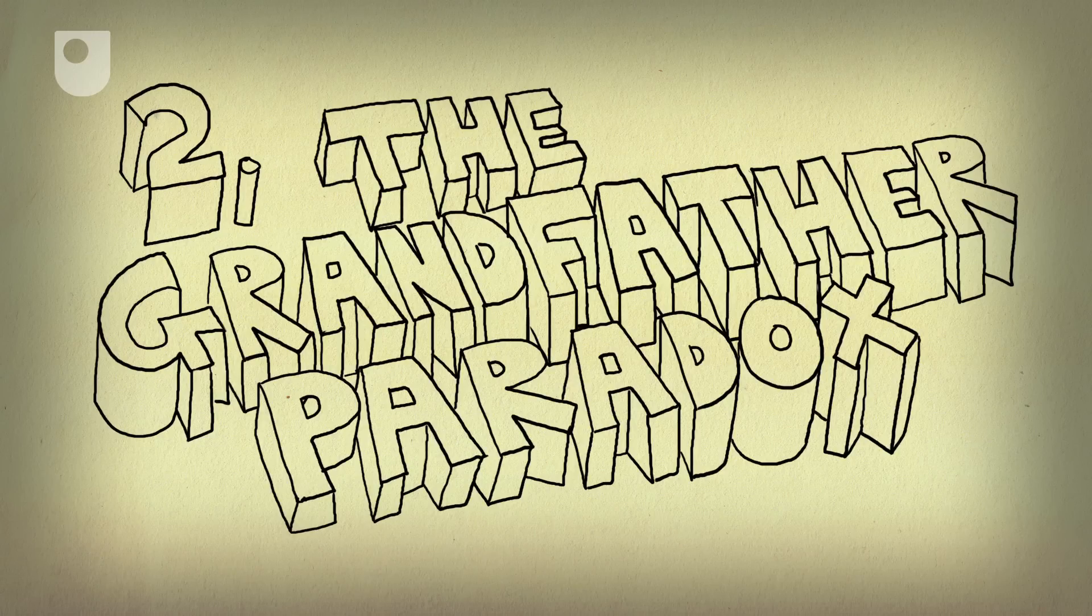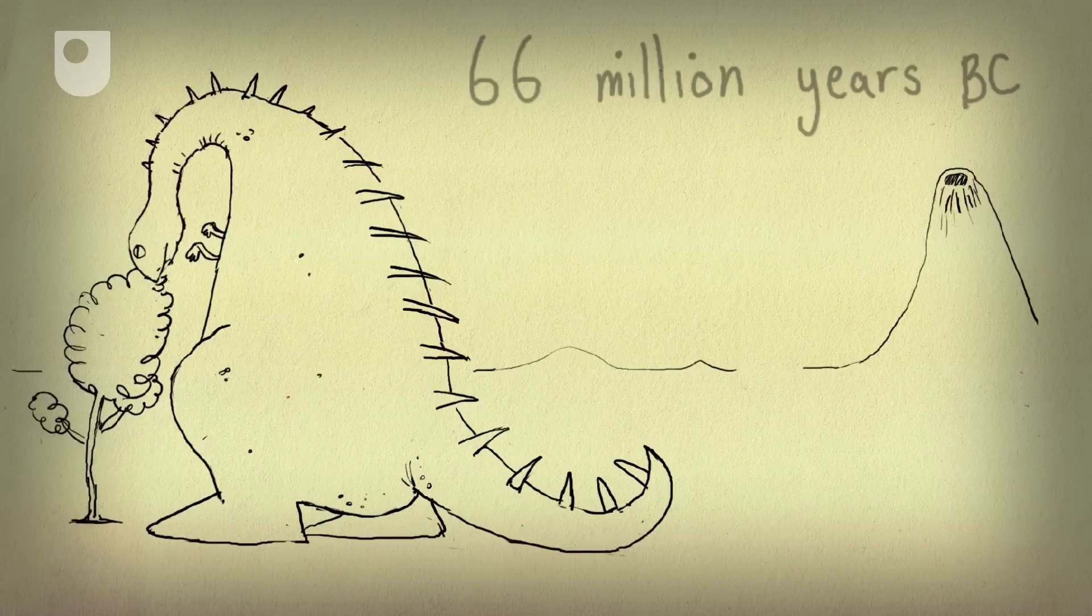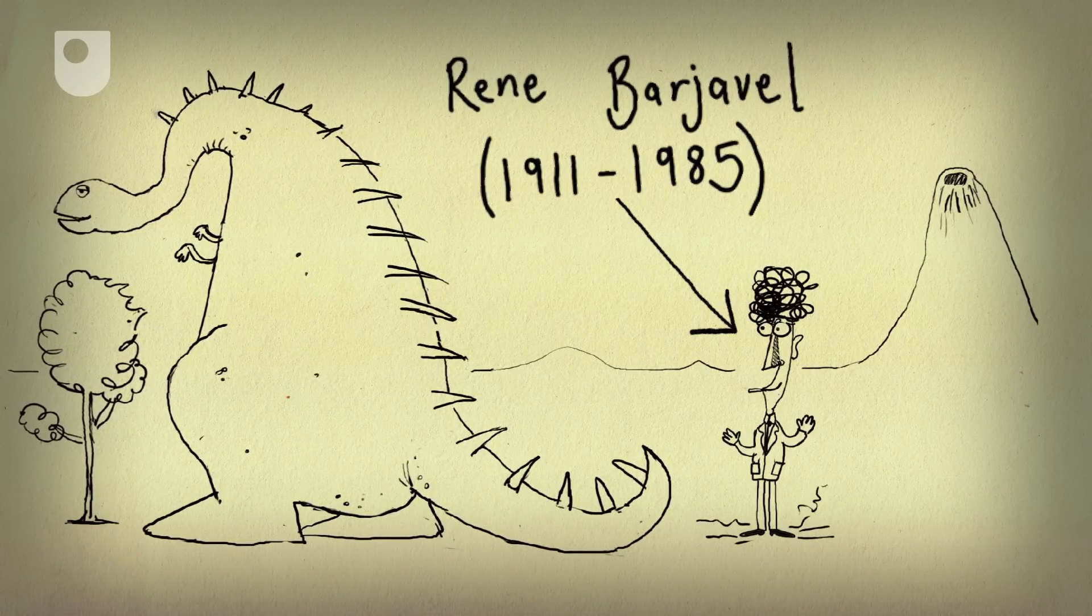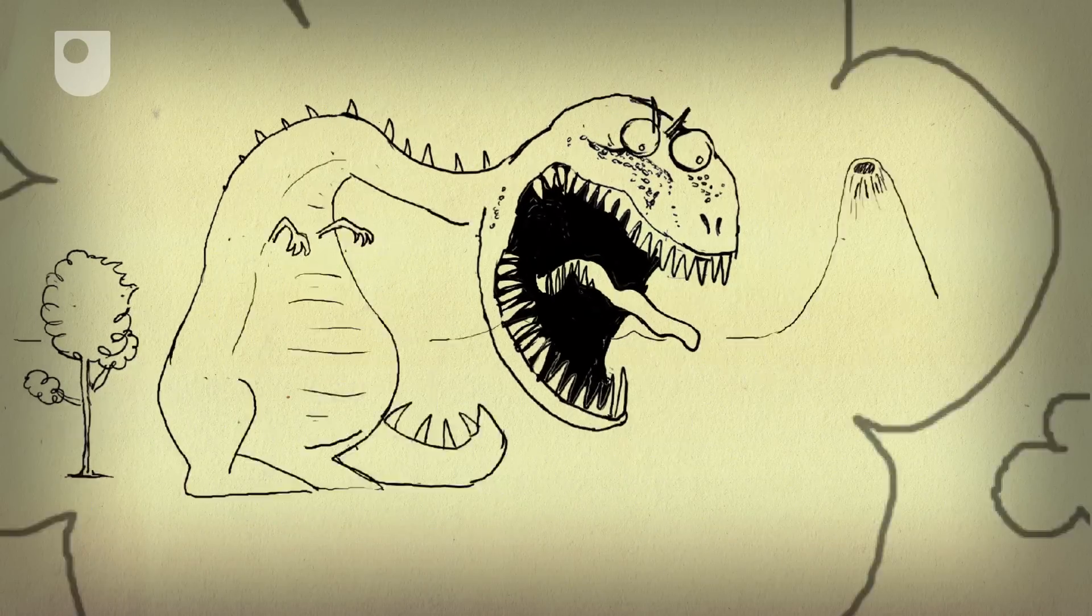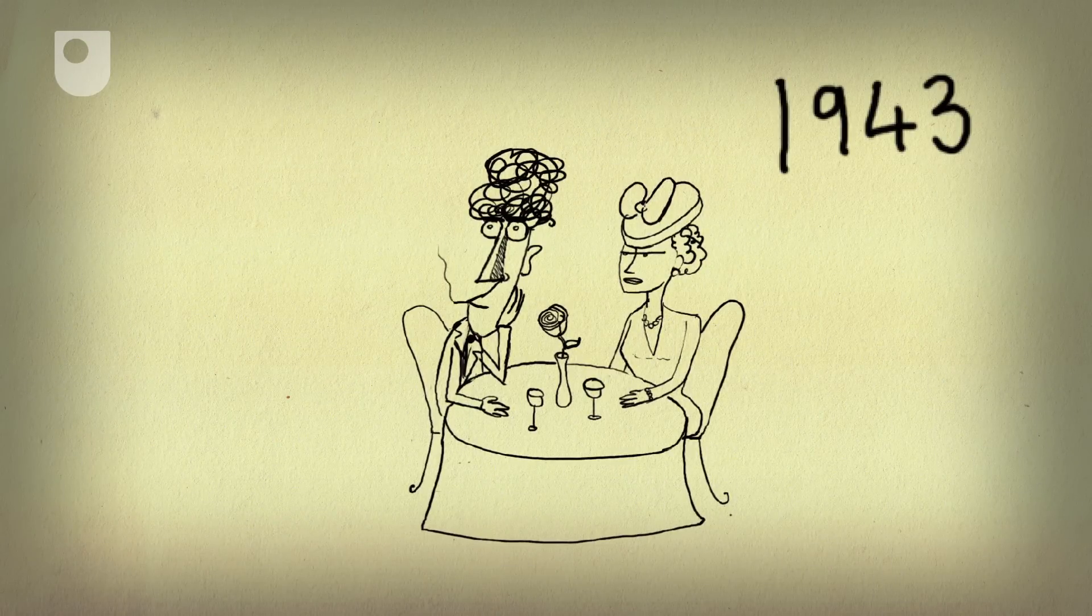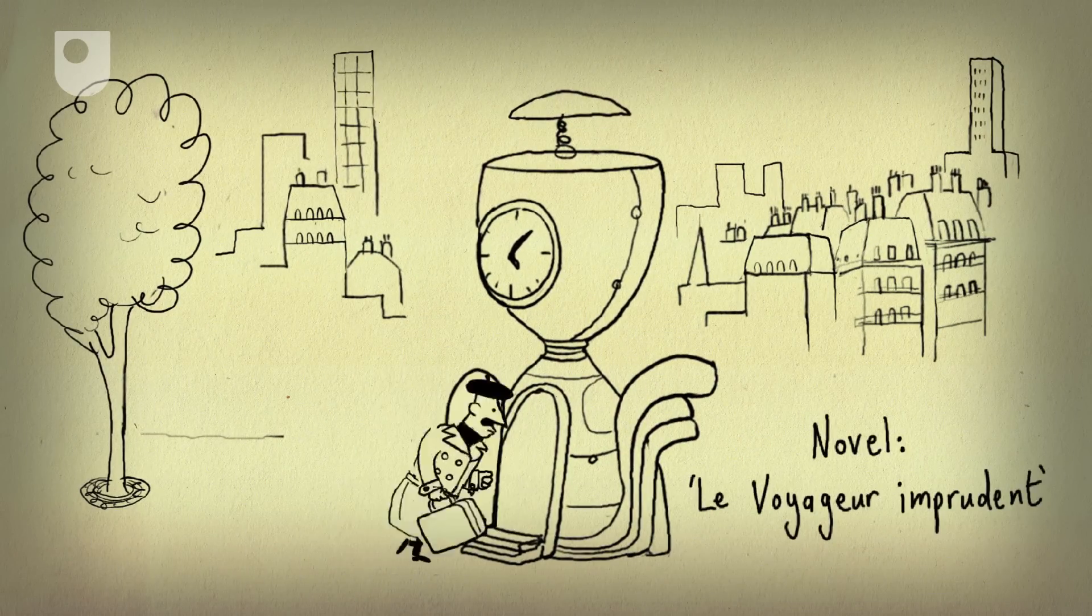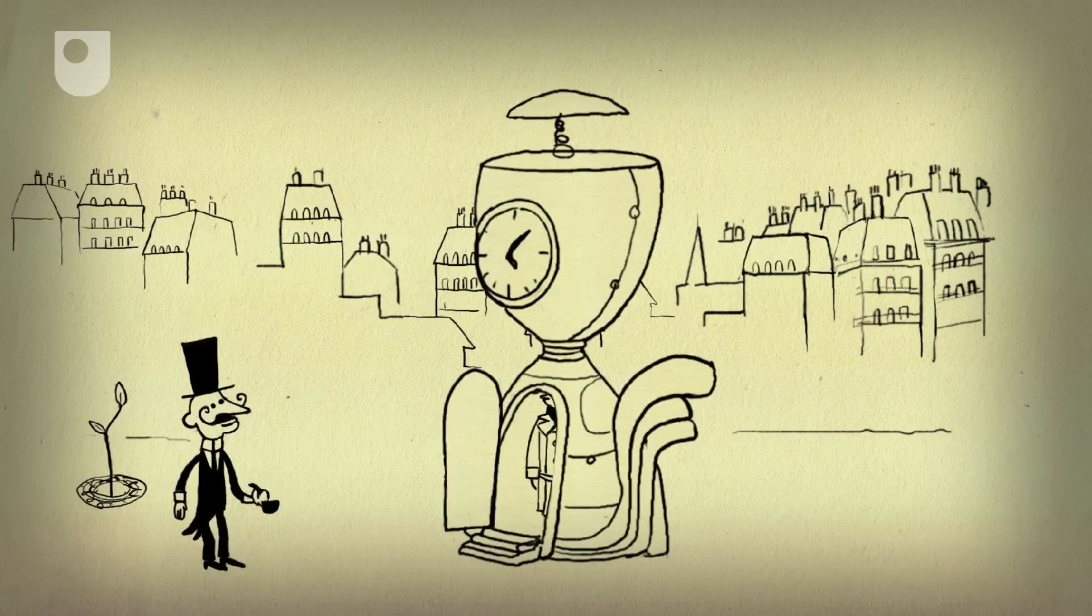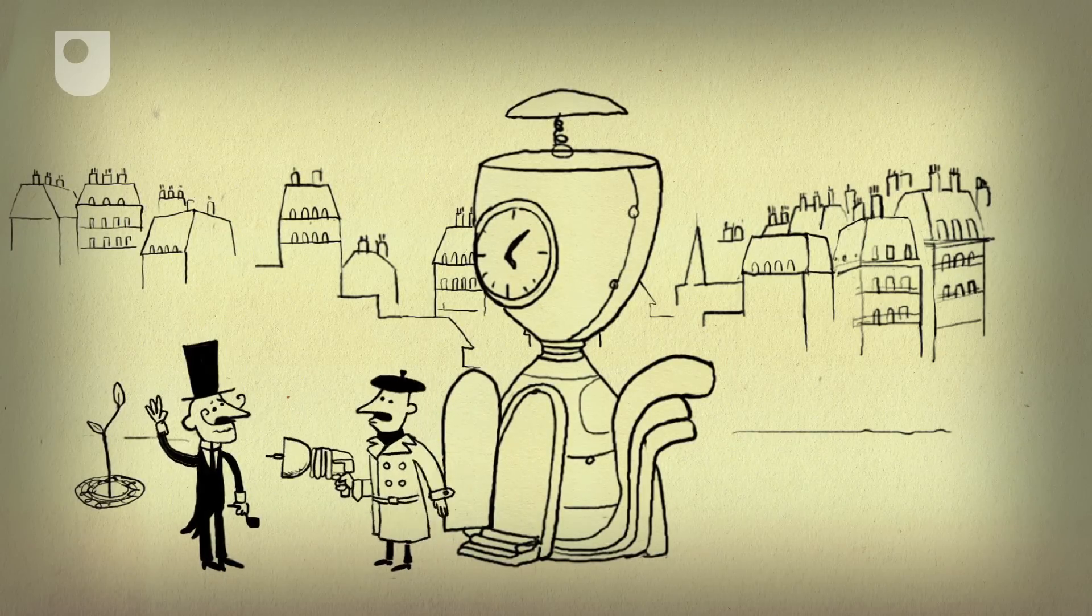Number 2. The Grandfather Paradox. Will time travel ever be possible? René Barjavel was a French journalist and science fiction writer who spent a lot of his time thinking about time travel. In 1943, Barjavel asked what would happen if a man went back in time to a date before his parents were born and killed his own grandfather.